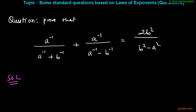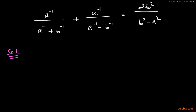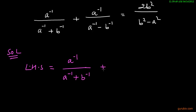First of all we shall start with the left hand side of this question. The left hand side is equals to a inverse over a inverse plus b inverse, plus a inverse over a inverse minus b inverse.